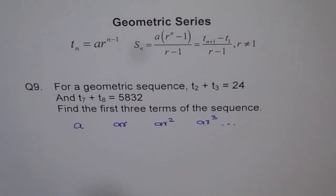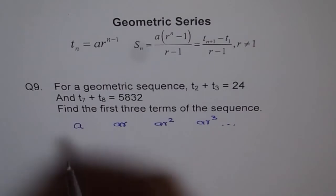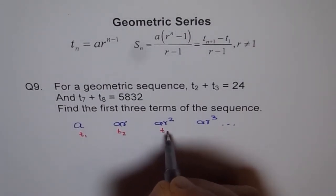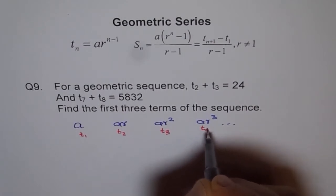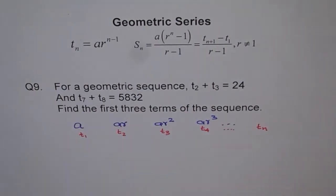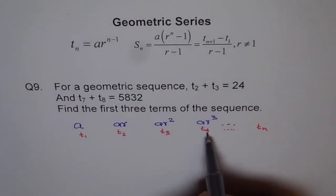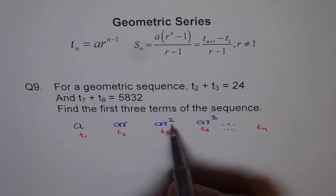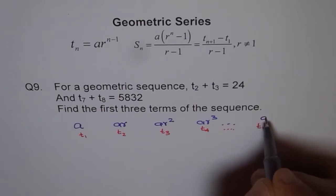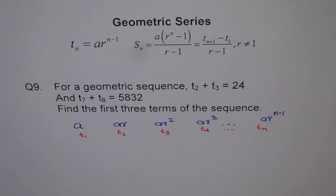So what we note here is that the first term has r to the power of 0. This is t1, this is t2, this is t3, this is t4, and so on. So tn has r power is 1 less than n. So r power is 1 less than the number of terms. So it is a r to the power of n minus 1. That is how you really get your formula.